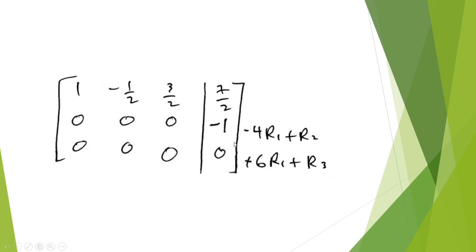And it just so happens that everything else cancels. And this is an indication that the system is inconsistent, or does not have a solution, because it's implying that 0x plus 0y plus 0z equals negative 1, which is not possible.